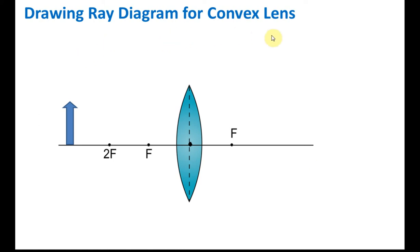Drawing a ray diagram for a convex lens. To draw a ray diagram, we need to know the three rules of drawing. Here we have an object, and we need to pick a point from the object where we assume all the light rays come from. Usually we take the highest point of the object.